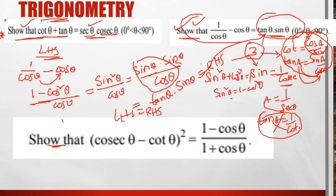LHS is equal to RHS — that is the result for this question. Note that you must write the identity, write the reciprocal, write in brackets, and write the formula for half marks. You have to write the complete process step by step.